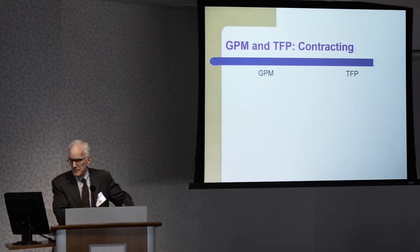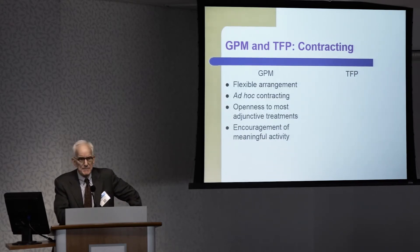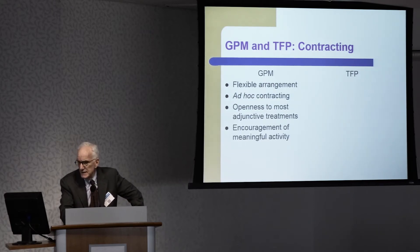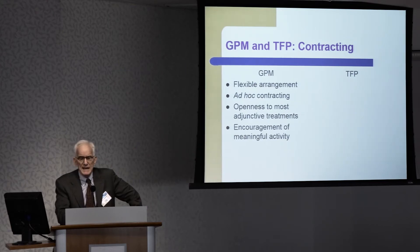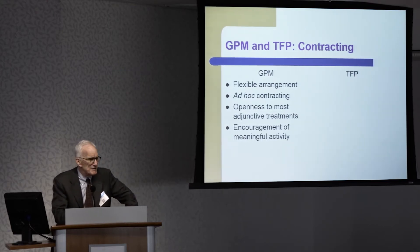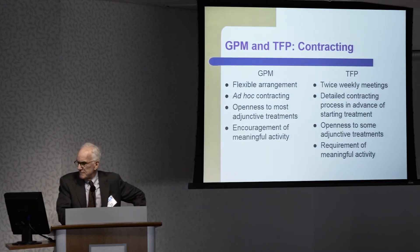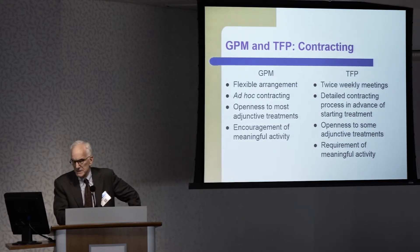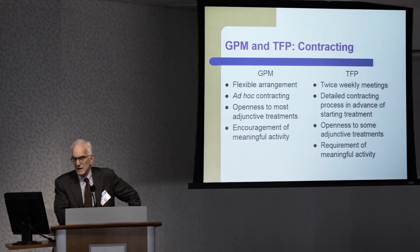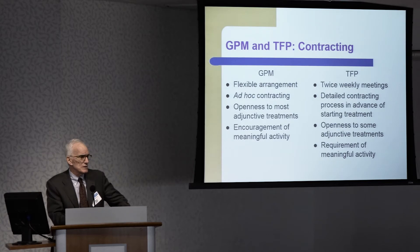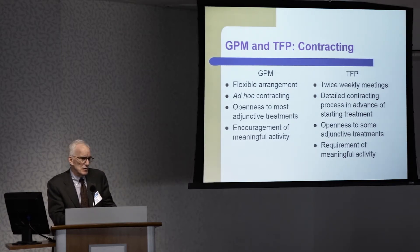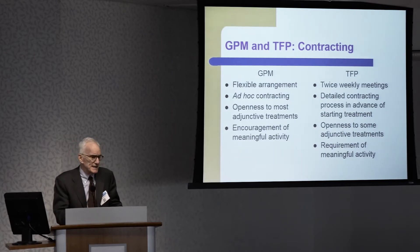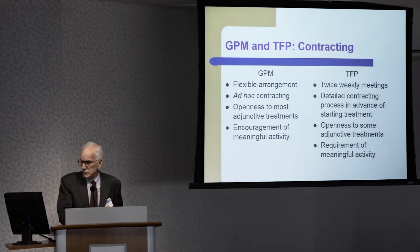Contracting is another area of major difference. GPM has a flexible arrangement — what I think of as ad hoc contracting — with openness to most adjunctive treatments and encouragement of meaningful activity, with some flexibility especially at the beginning. With TFP, the contract is for twice-weekly meetings and involves a detailed contracting process in advance of starting treatment, with openness to some adjunctive treatments and a requirement for meaningful activity. A TFP clinician might not begin therapy for a number of weeks, even months, which is quite different from GPM, which is designed to be flexible and accommodating.